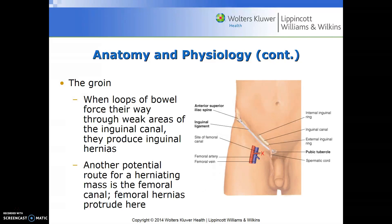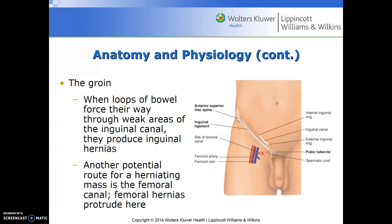When loops of bowel force their way through weak areas of the inguinal canal, they produce an inguinal hernia. Another potential route for a herniating mass is the femoral canal, where femoral hernias protrude. This illustration shows you the internal and external inguinal rings and the site of the femoral canal.